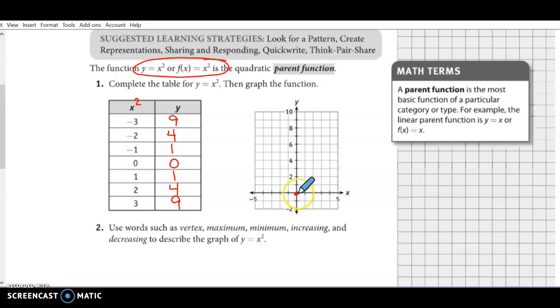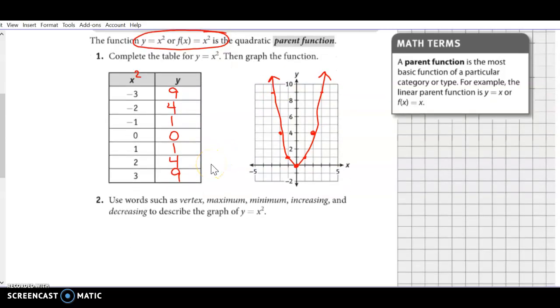So when we graph this, we talked about we can go over 1 and up 1, over 1 and up 1, over 2 and up 4, and on the other side, over 3 and up 9. Because we have those buddy points, we have that axis of symmetry that we talked about last week. But remember what the parent function is.